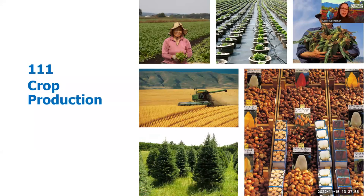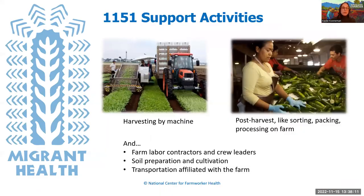NAICS code 111, Crop Production, includes grains and nuts, fruits and vegetables, nurseries, and other commodities like tobacco, cotton, hops, and Christmas trees. Code 1151, Support Activities for Crop Production, includes harvesting by machine, post-harvest activities like sorting, packing, and processing on the farm, soil preparation and cultivation, and transportation affiliated with the farm. Two important notes: post-harvest activities like sorting, packing, and processing must occur on the farm to meet the 1151 code, and transportation must be affiliated with the farm — not contracted out to an independent company.